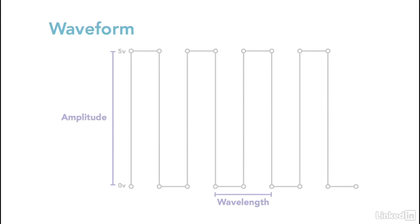This graphic outlines the various components of an electrical wave. The wavelength is how long it takes for a wave to complete one cycle. This is also called frequency, or period. The amplitude is the height of the wave, in our case, 5 volts on the Arduino.